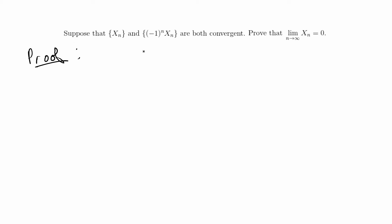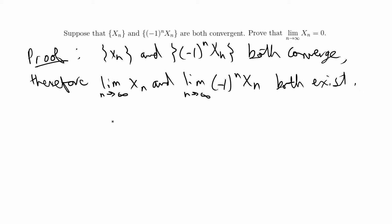The first thing we can say is X_n and (-1)^n X_n converge, therefore the limit of X_n and the limit of the other sequence both exist. We don't know what these limits are, so I'm just going to say let the limit of X_n as n goes to infinity equal to X and we're going to call the other sequence Y_n. This is for any n in the natural numbers. This is X_n except the odd numbers are now negative.